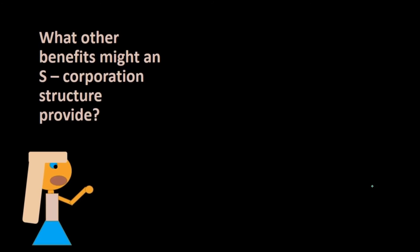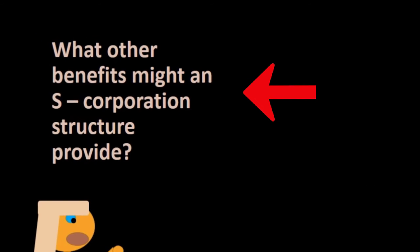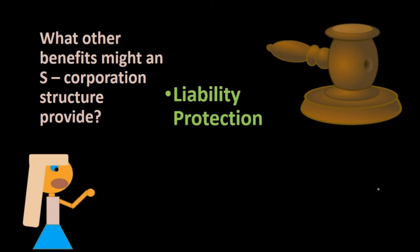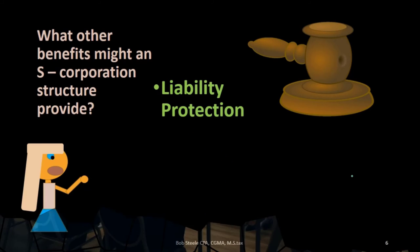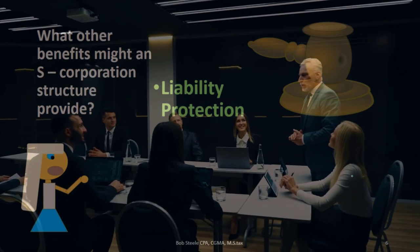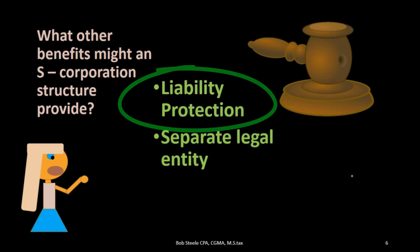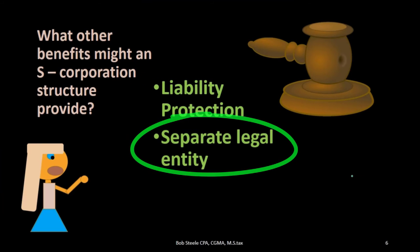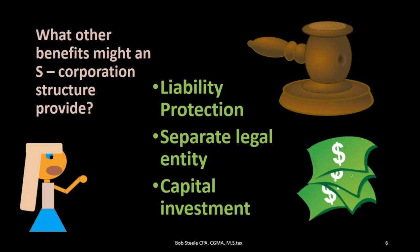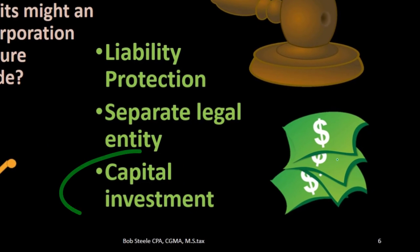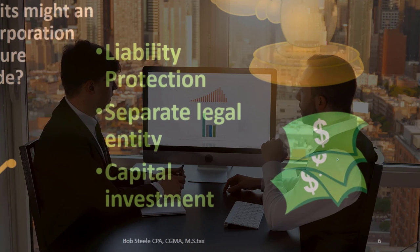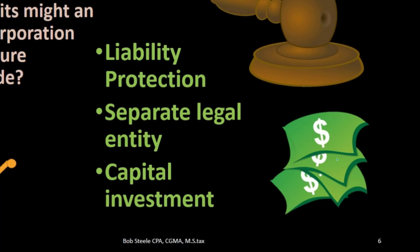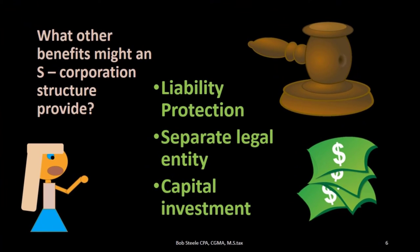What other benefits might an S corporation structure produce? The main benefit is liability protection — that's a major reason why someone would want to incorporate, to increase protection of personal assets through being a separate legal entity. It's also possible to attract more capital investment because we can have more shareholders and therefore equity investments through the purchasing of shares within an S corporation.